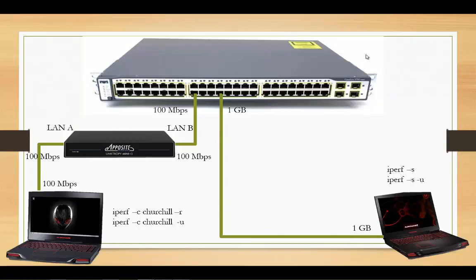Here's a little lab setup: we've got a laptop down here, another laptop over here. It's connected at one gig to the switch. The switch is a hundred meg to my little Linktropy mini — a LAN/WAN emulator where you can set packet loss, delay, and stuff like that. LAN B is plugged in at a hundred meg, LAN A plugged in at a hundred meg, and this laptop is set for 100 meg.